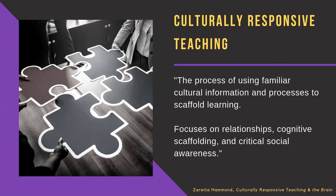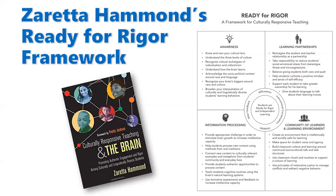One of the key things in Zaretta Hammond's book is the Ready for Rigor framework. It is in her book but also available online as a standalone document on her website. The framework is broken into four quadrants, each one a way educators can think about education to get students ready for the kind of rigorous critical thinking they'll need to be successful. We'll briefly talk about each of the four and then discuss how to think about these concepts in an online environment.